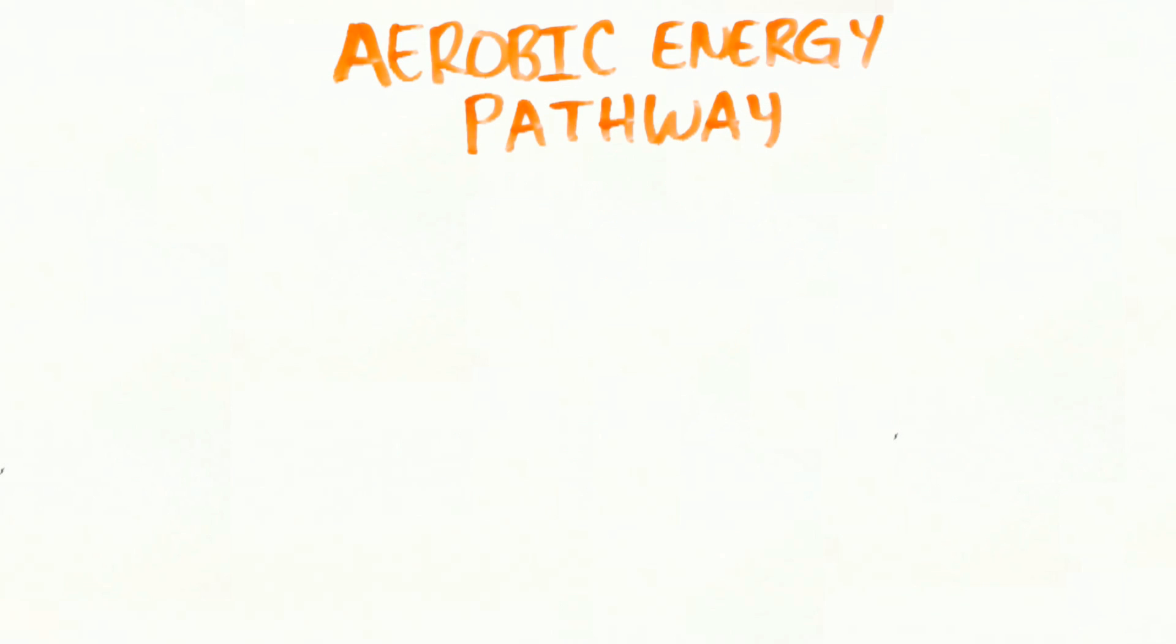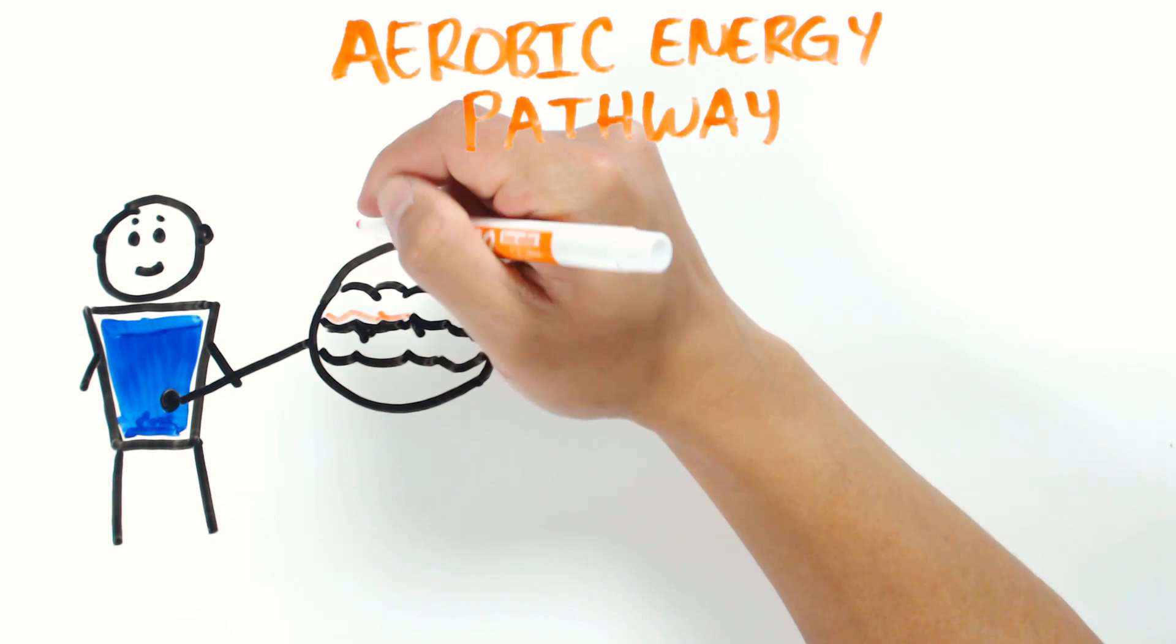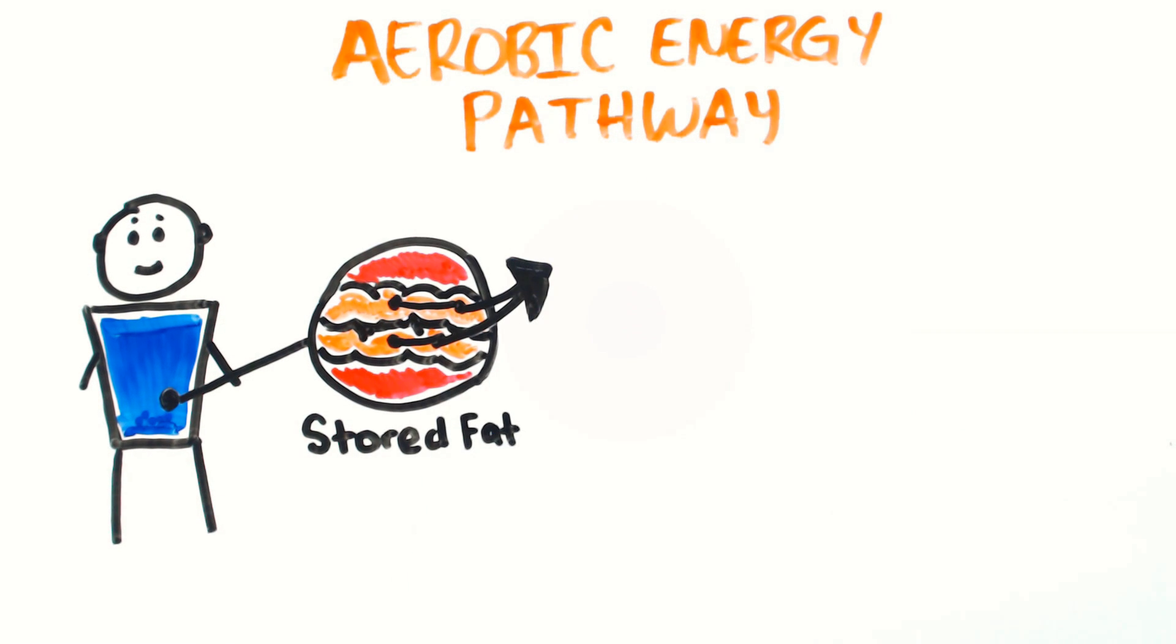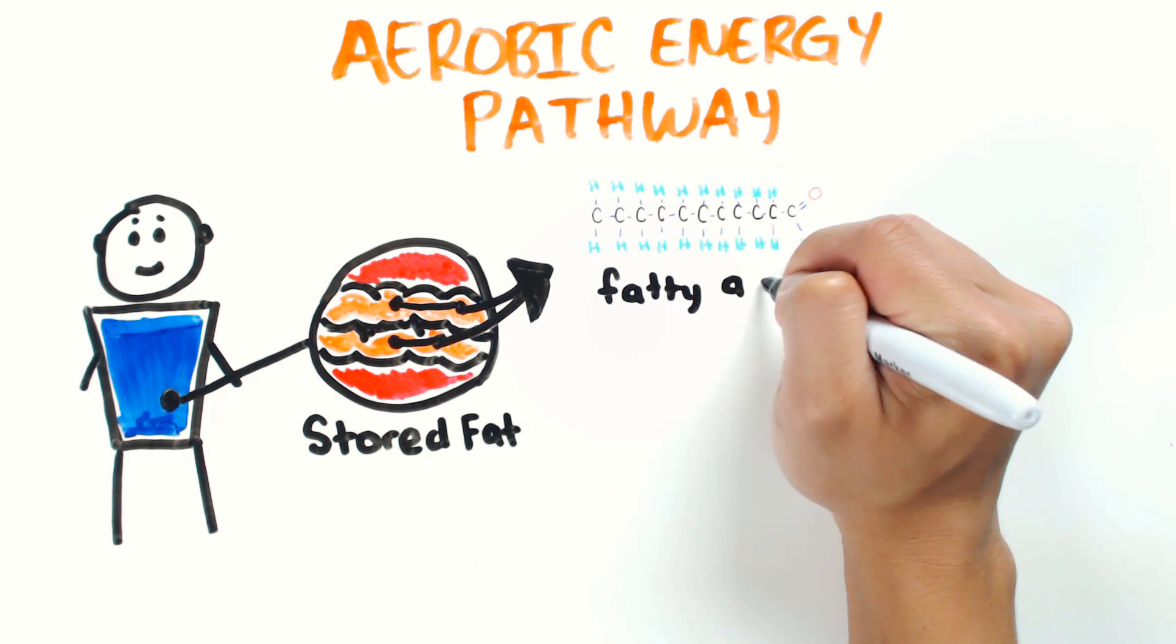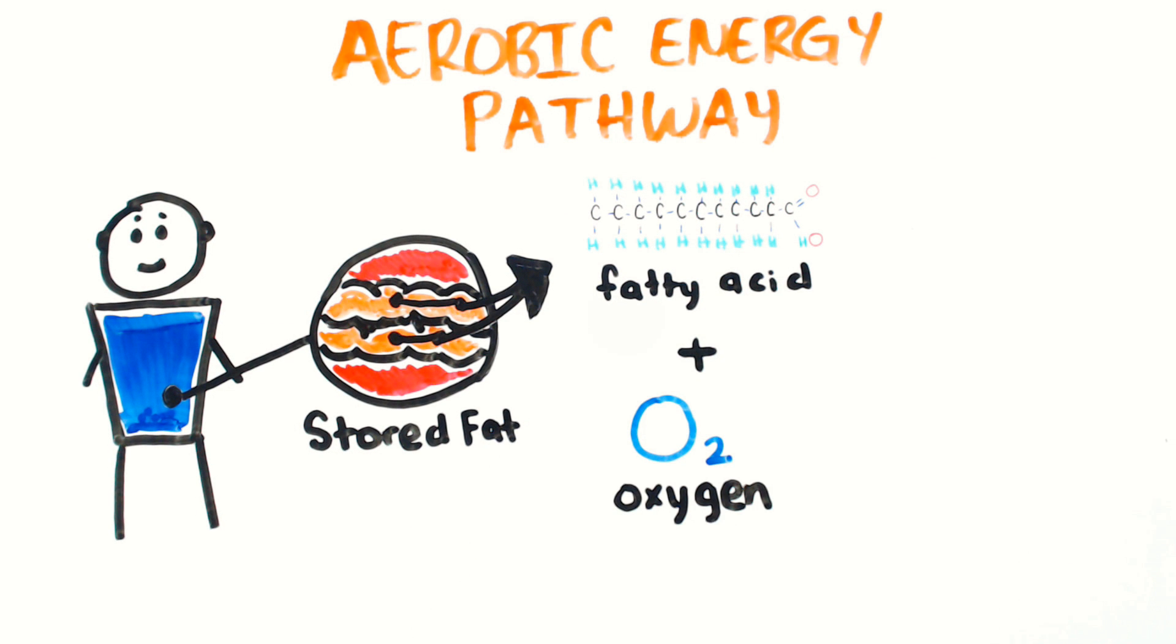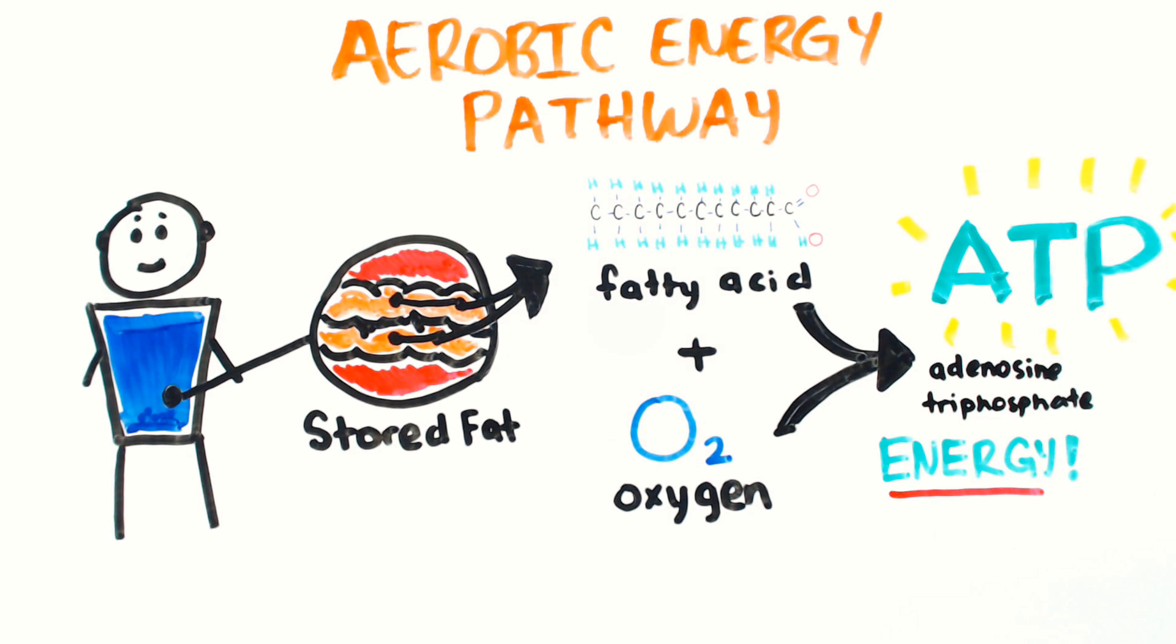This aerobic energy pathway is the energy system in your body that uses stored fat after being converted into fatty acids in conjunction with oxygen and other chemicals to produce the body's sole source of energy known as ATP.